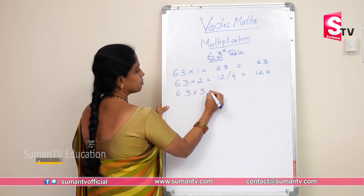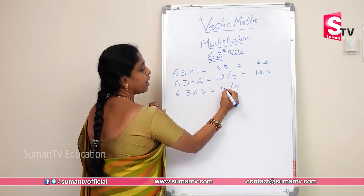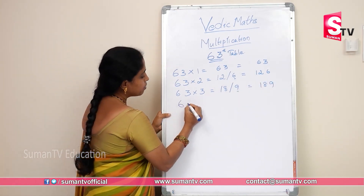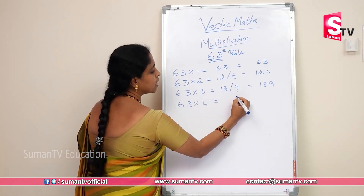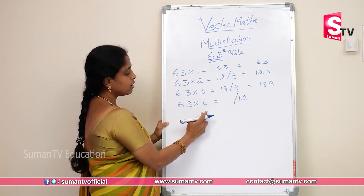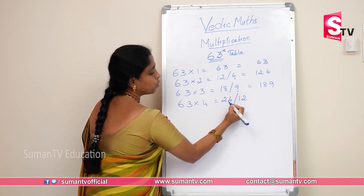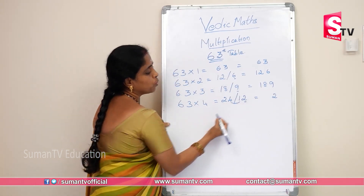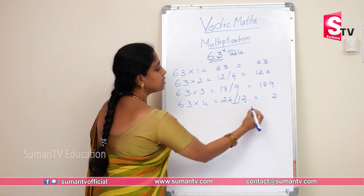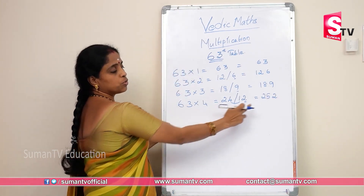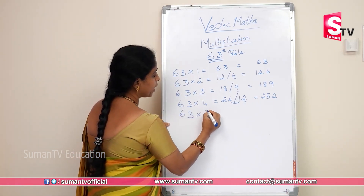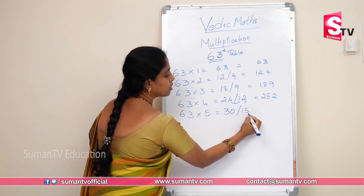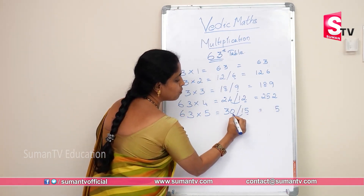63 into 3: 3×3 = 9, 3×6 = 18. Units place write 9, carry 1 with 18, so 189. 63 into 4: 4×3 = 12, 4×6 = 24. Using the Vedic Math method, write digit 2 here, 1 plus 4 = 5. So 63 into 4 is 252.